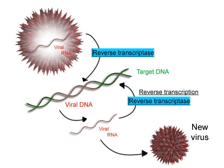The stretch of DNA transcribed into an RNA molecule is called a transcription unit and encodes at least one gene. If the gene encodes a protein, transcription produces messenger RNA. The mRNA, in turn, serves as a template for the protein's synthesis through translation. Alternatively, the transcribed gene may encode for non-coding RNA such as microRNA, ribosomal RNA, transfer RNA, or enzymatic RNA molecules called ribozymes.